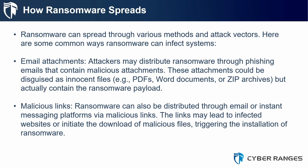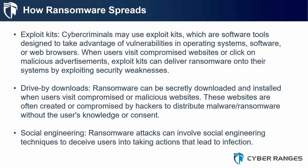How does ransomware spread? Starting with the most common method — email attachments. Attackers distribute ransomware through phishing emails containing malicious attachments disguised as innocent files, for example PDFs, Word documents, or ZIP archives, which actually contain the ransomware payload, possibly as part of a multi-staged attack. Ransomware can also be distributed through email or instant messaging via malicious links that lead to infected websites or initiate the download of malicious files, triggering execution of the ransomware.